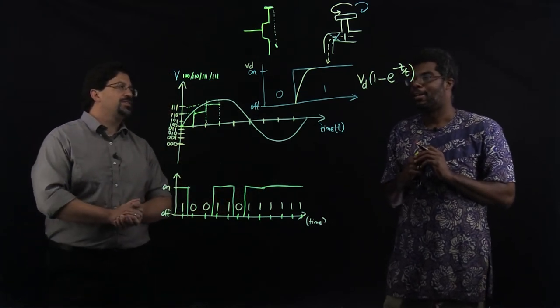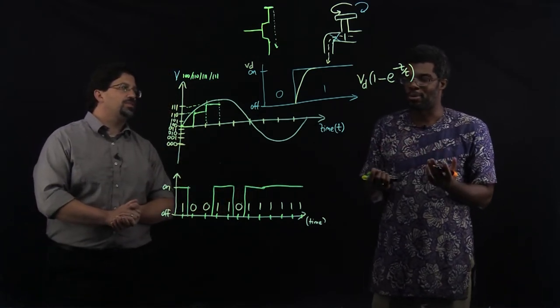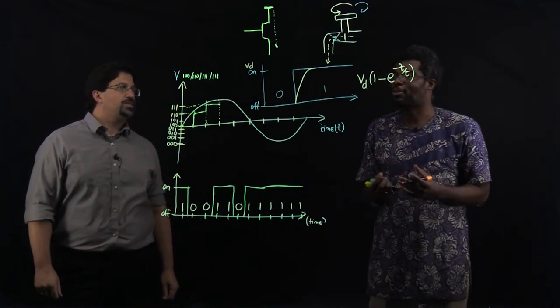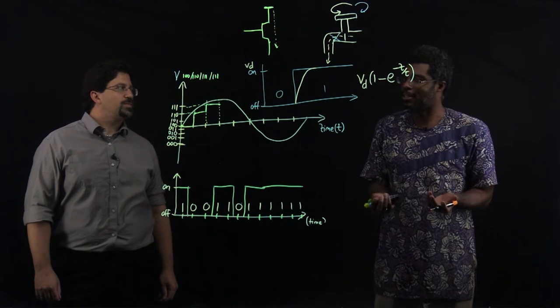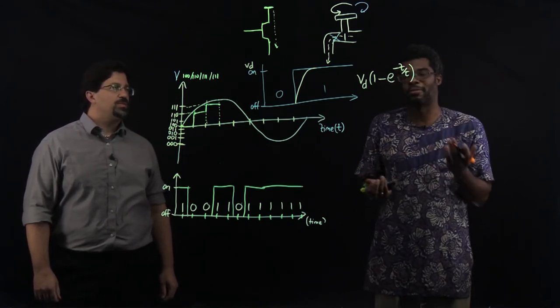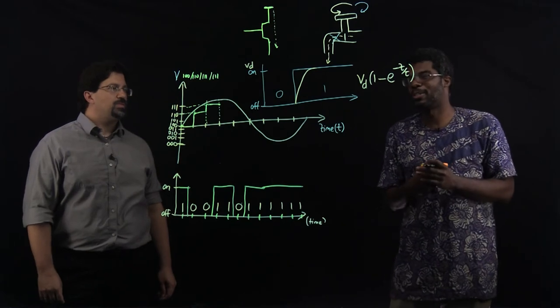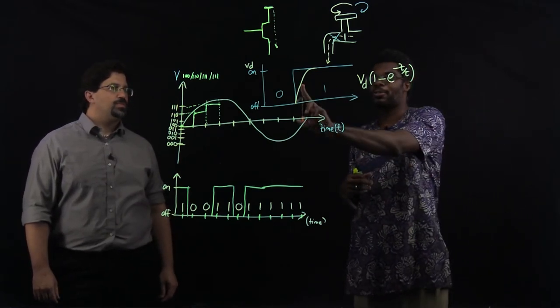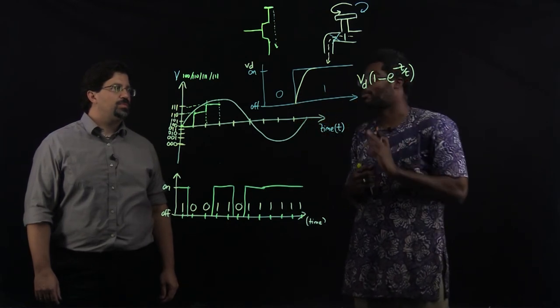So if you've ever used a computer or a phone or any other digital device, we often talk about speed, how fast it is, right? So if you buy a computer, it'll say something like it's 1.5 gigahertz or 2 gigahertz, where that number comes from. The number comes from how fast you can go from a 0 to a 1 or a 1 to a 0.